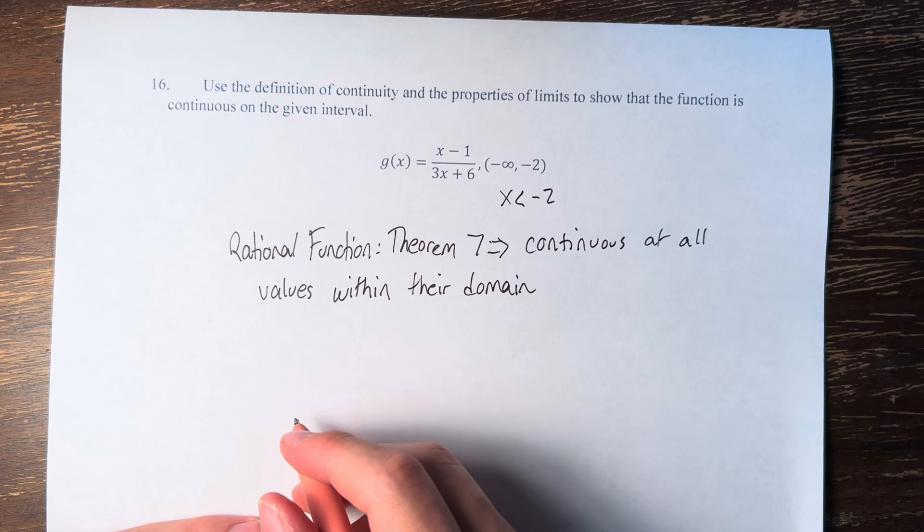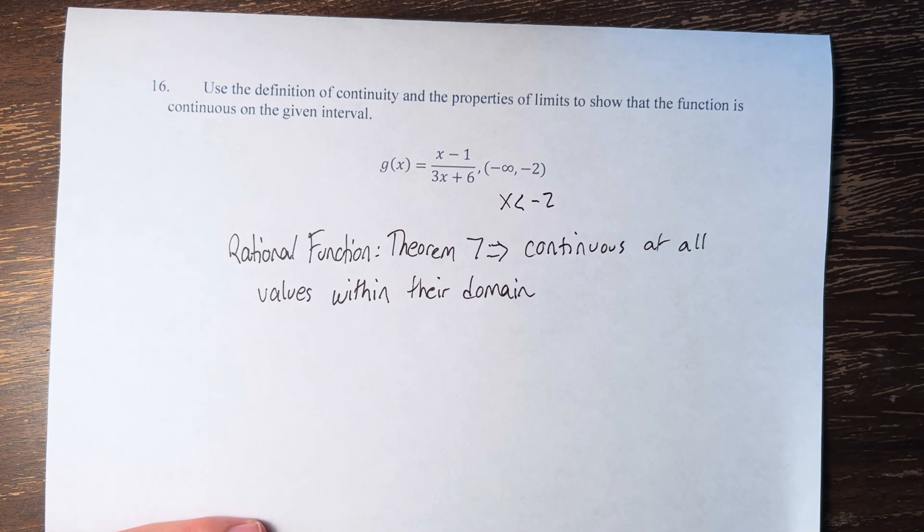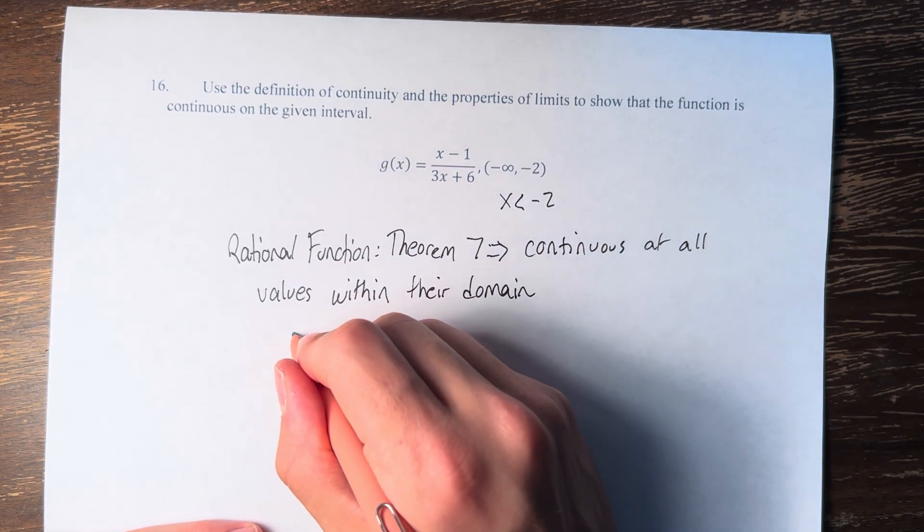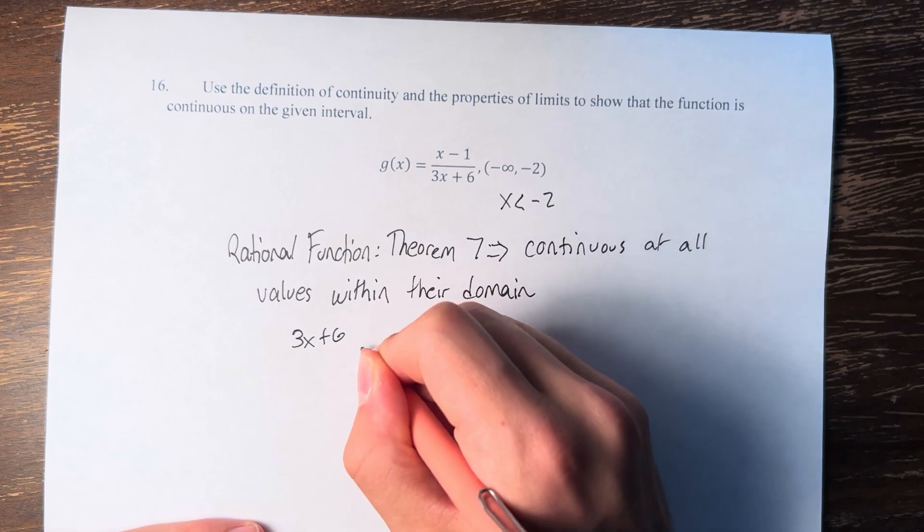So g of x is equal to x minus 1 over 3x plus 6. The only domain restriction for rational functions is that their denominators, in this case 3x plus 6, cannot equal 0.